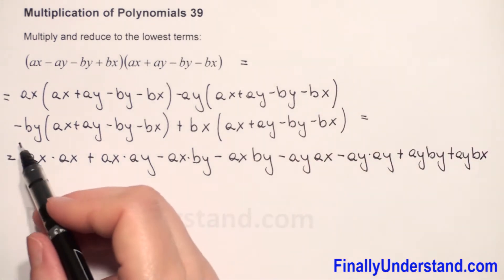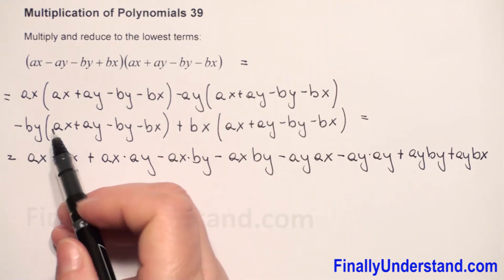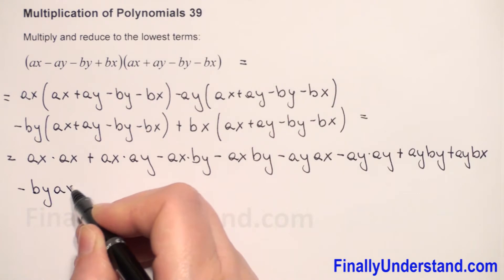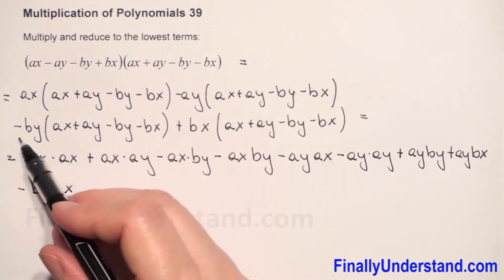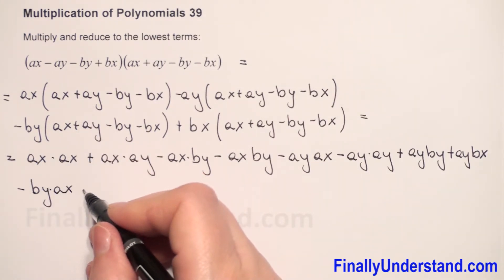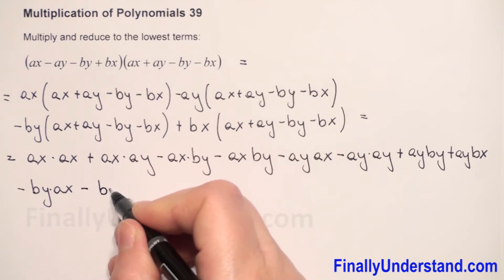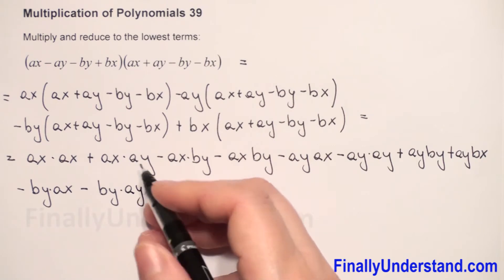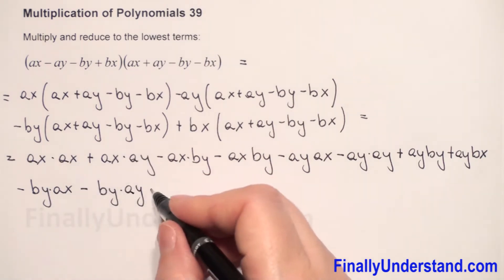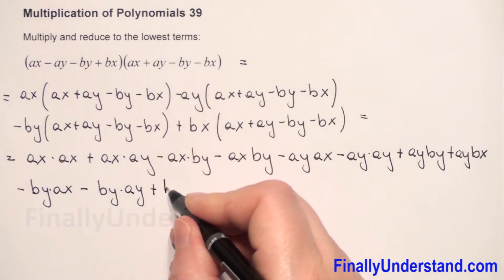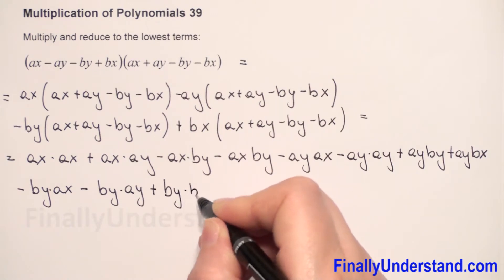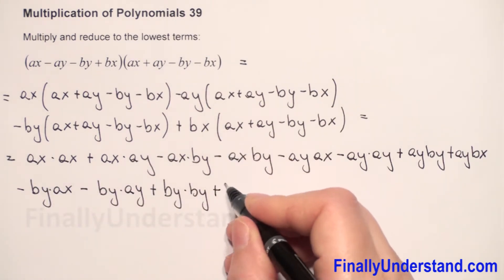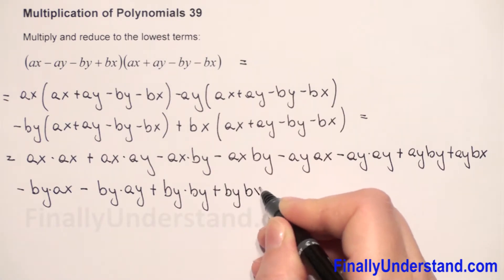And next we have negative times positive, so we will be negative BY. Then negative times negative, so we will be positive: BY times BY. And again negative times negative gives positive: BY times BX.